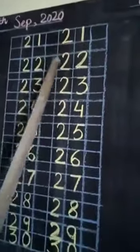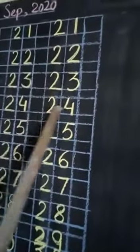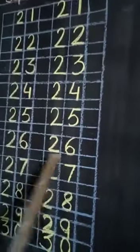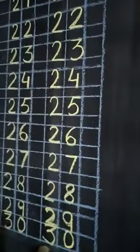Okay ji. Repeat with me. 21, 22, 22, 23, 24, 25, 26, 27, 28, 29, 30. Okay ji.